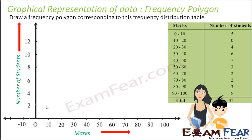Let's solve one more question. We are able to draw a frequency polygon with this data. So 0 to 10 marks — 5 students; 10 to 20 — 10 students; 20 to 30 — 4 students; 30 to 40 — 6 students. If you see, the class size is 10 throughout, so we don't have to apply the logic of creating a new frequency — this frequency will hold true.